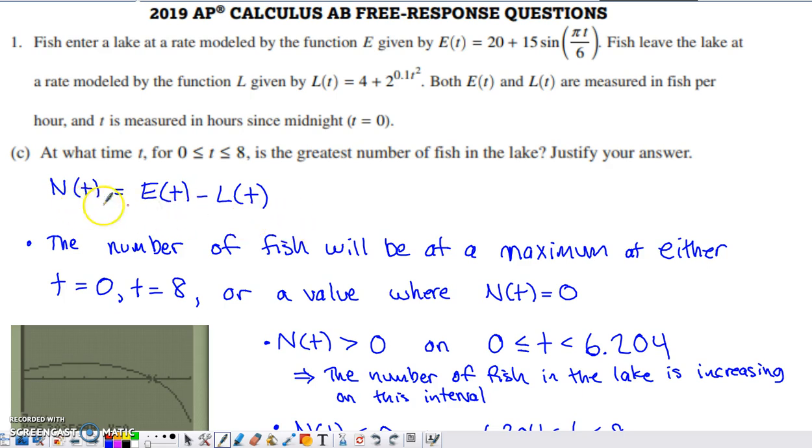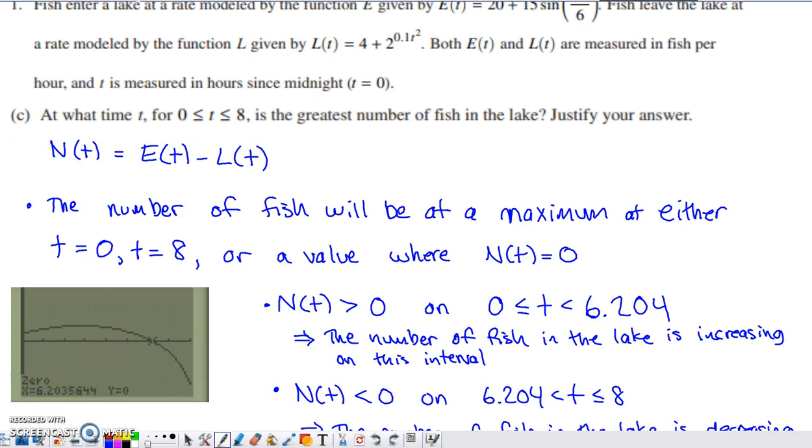So I actually graphed this net rate of change function. I did shrink the viewing window to only have the values of t or values of x range from zero to eight. And here's what this net rate of change function looked like. So I looked at this net rate of change function and I thought, all right, N(t): positive, positive, positive, positive, positive, positive, positive, zero, and then negative, negative, negative, negative.